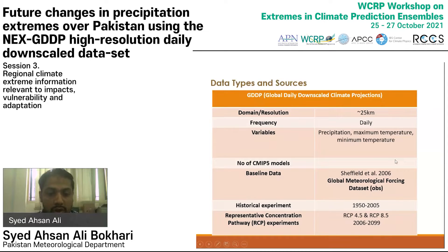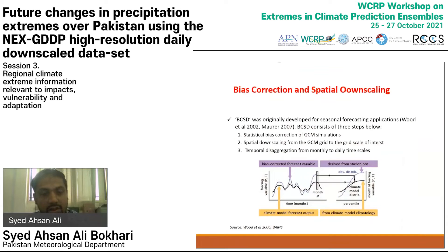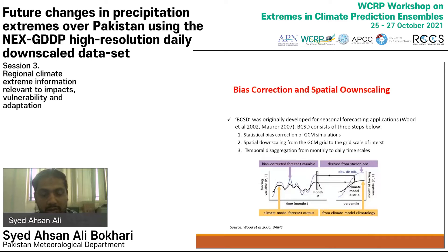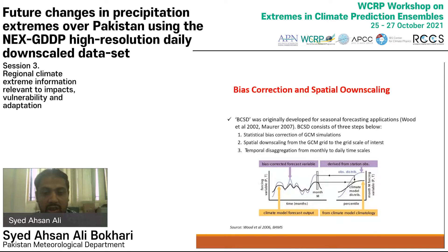The technique applied for downscaling is bias correction and spatial downscaling, originally developed for seasonal forecasting applications. Three major steps are involved: first, statistical bias correction of the GCMs, which involves comparing biases with observations and applying those biases to GCM outputs; second, spatial downscaling from the low-resolution GCM grid to the final target resolution; and third, temporal disaggregation, where GCM raw data at monthly timescale is disaggregated to daily timescale.